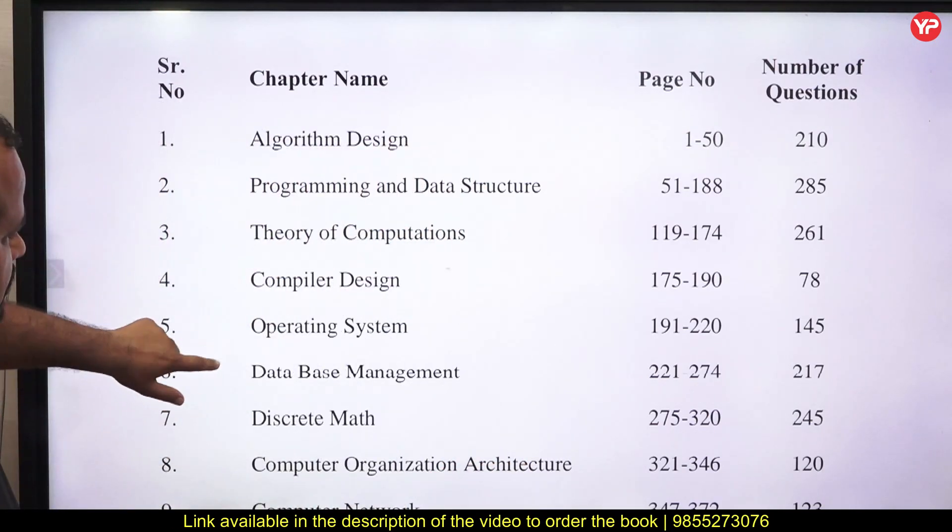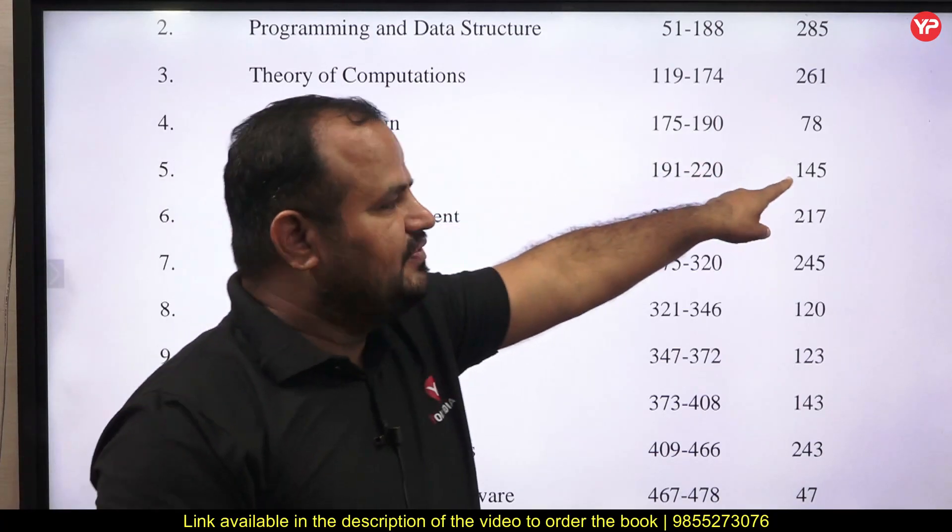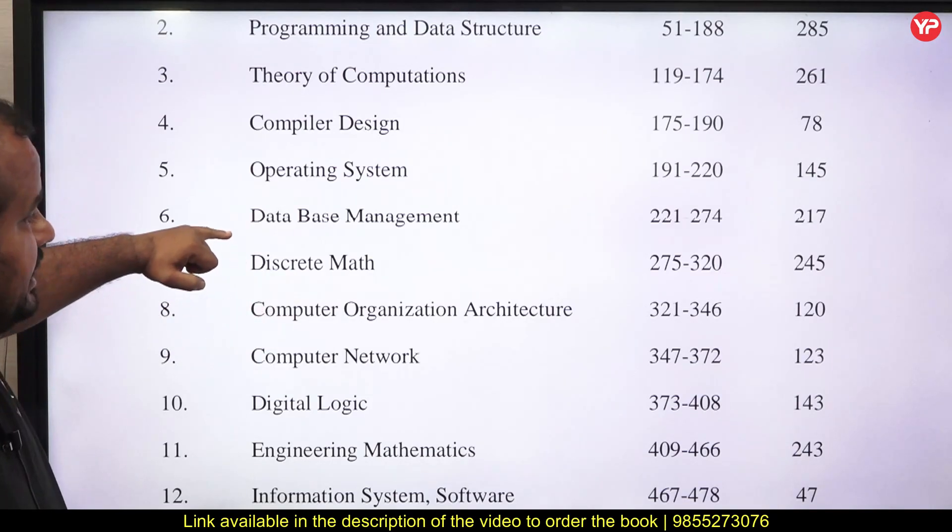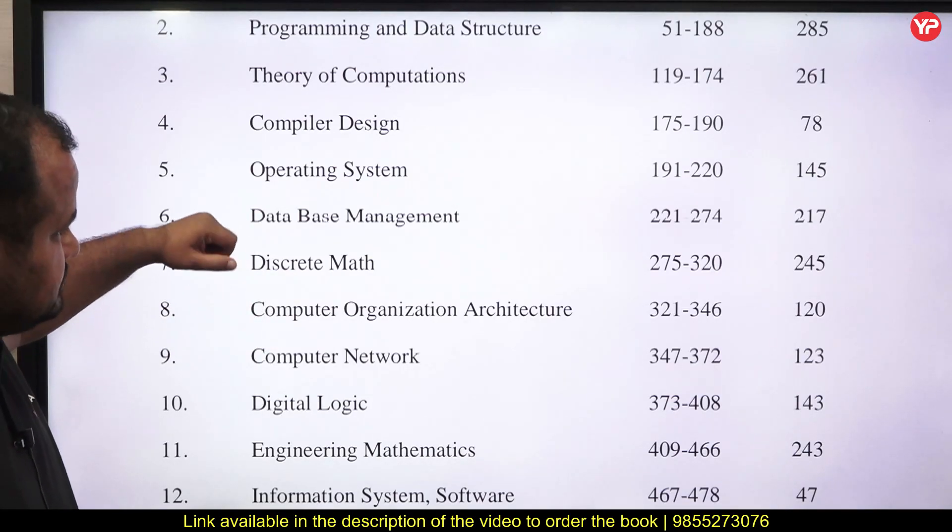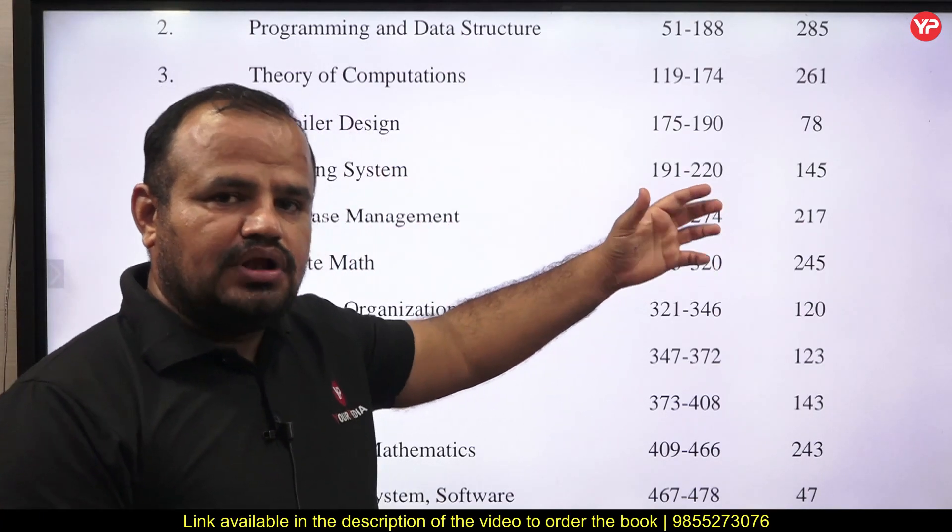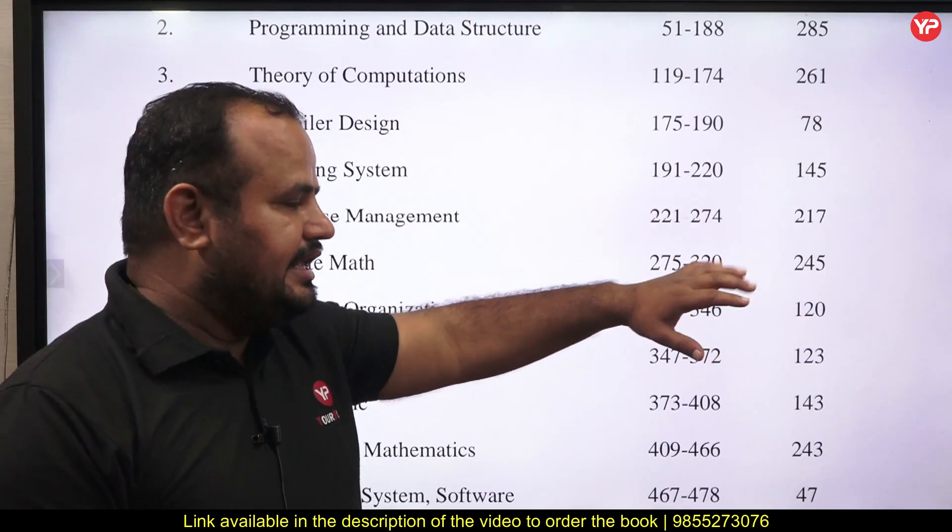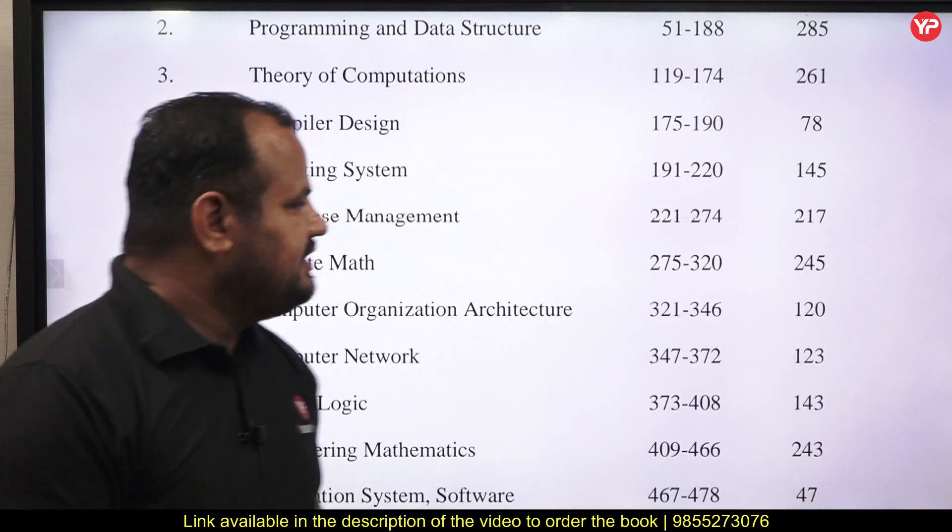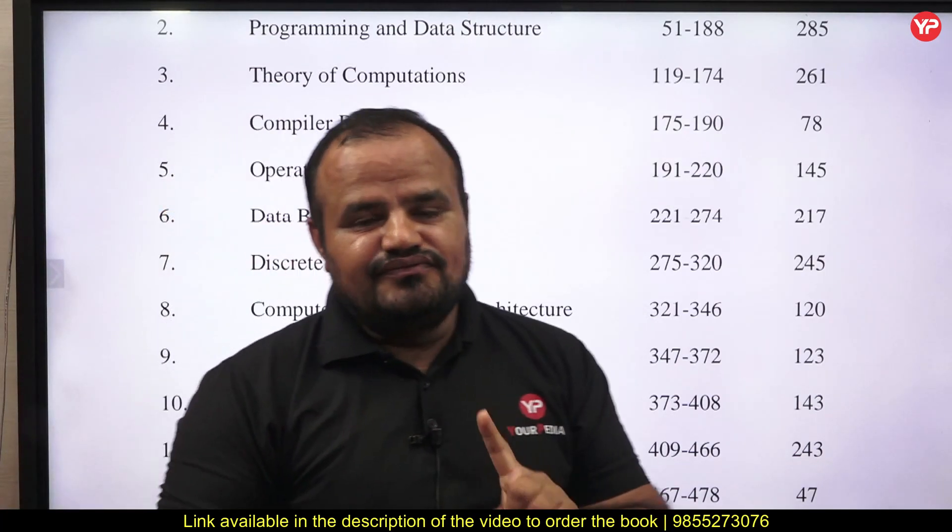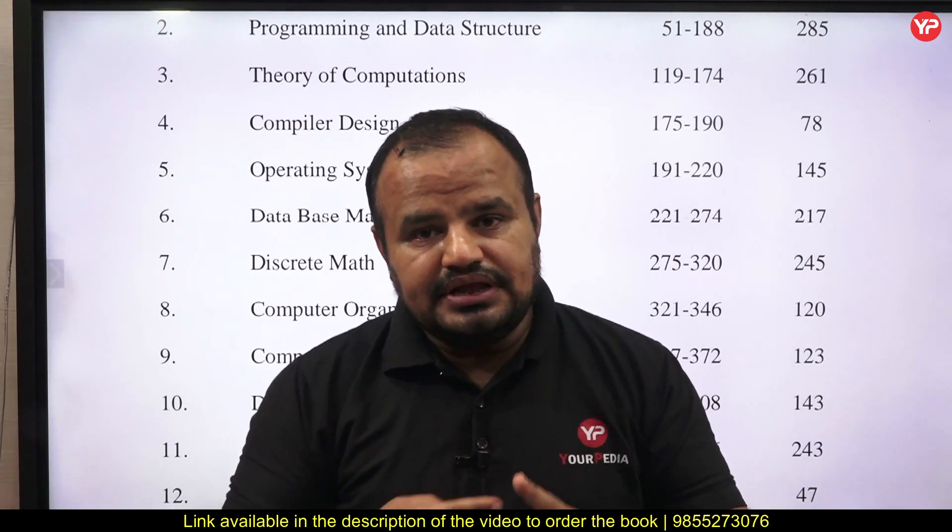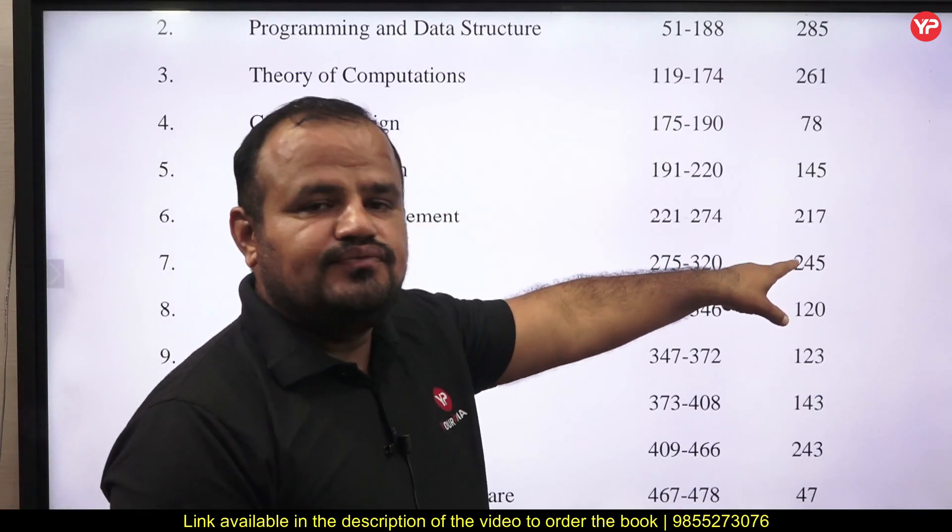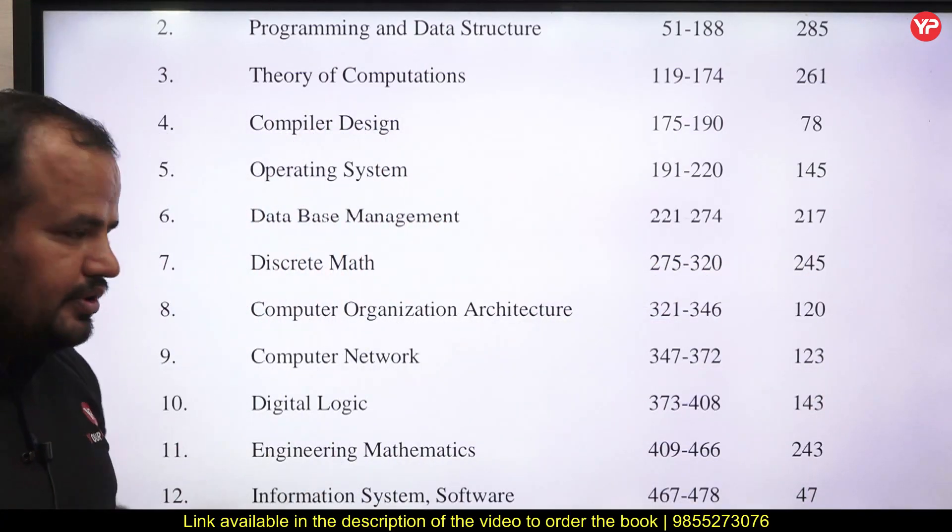Next, operating system: almost 150 problems. Database management system: as we know, it is a somewhat big subject, and the main areas are SQL, normalization. Here we have almost 217 problems. Discrete math covers set theory, function, relations, tree, graph. That is why it covers almost 245 problems, and still updation is going on.